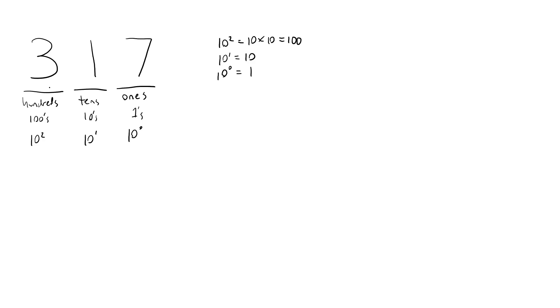And to find the total value of this number, we multiply each digit by its respective power of 10. So if we add up 3 times 10 squared, plus 1 times 10 to the first, plus 7 times 10 to the zero, and that's going to be 3 times 100, which is 300, plus 1 times 10, which is 10, plus 7 times 1, which is 7. So 300 plus 10 plus 7 is 317, and we just have what we started with.